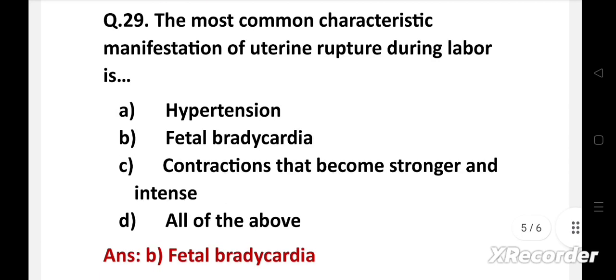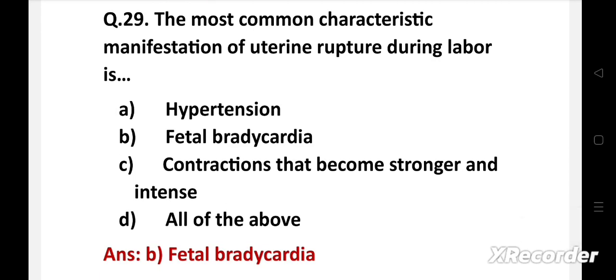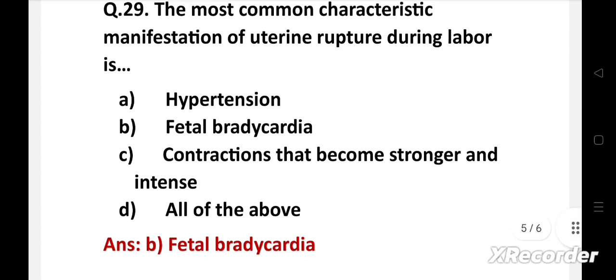Right answer is option B, fetal bradycardia. Fetal bradycardia is the most common characteristic manifestation of uterine rupture during labor. Uterine rupture is a rare but serious childbirth complication that can occur during vaginal delivery. This condition affects less than one percent of pregnant women. It almost always occurs in women with uterine scars from previous cesarean deliveries or other uterine surgeries.